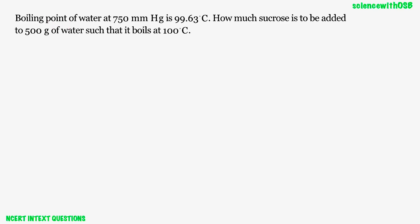Boiling point of water at 750 mmHg is 99.63 degree Celsius. How much sucrose is to be added to 500 gram of water such that it boils at 100 degree Celsius?